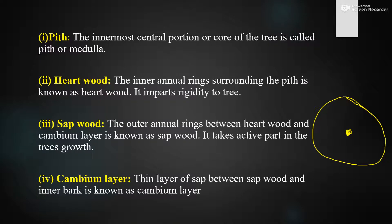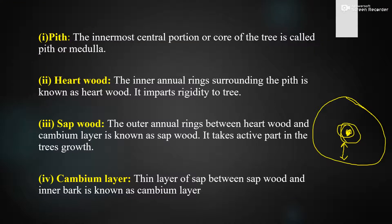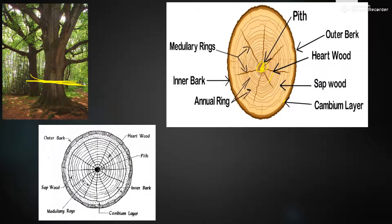Moving to sapwood: the outer annular rings between the heartwood and cambium layer are known as sapwood. The outer annular rings from the heartwood up to the cambium layer — these annular rings are known as sapwood.